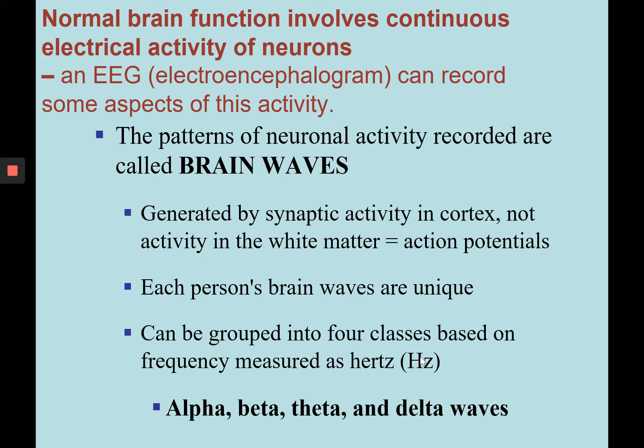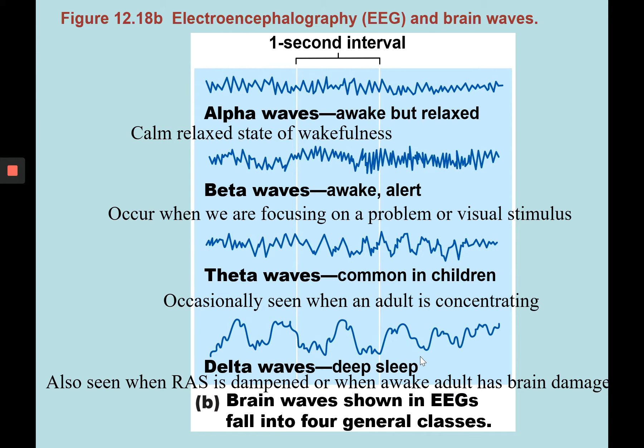Each person's brain waves are unique, and we can group them into four classes: alpha, beta, theta, and delta waves. Alpha waves occur when someone is awake but relaxed — a calm, relaxed state of wakefulness. Beta waves are produced when someone is awake but alert, using the reticular activating system to focus on a problem or visual stimulus. Theta waves are more common in children, rarely seen in adults. Delta waves are indicative of deep sleep, seen when the reticular activating system is dampened or inhibited.